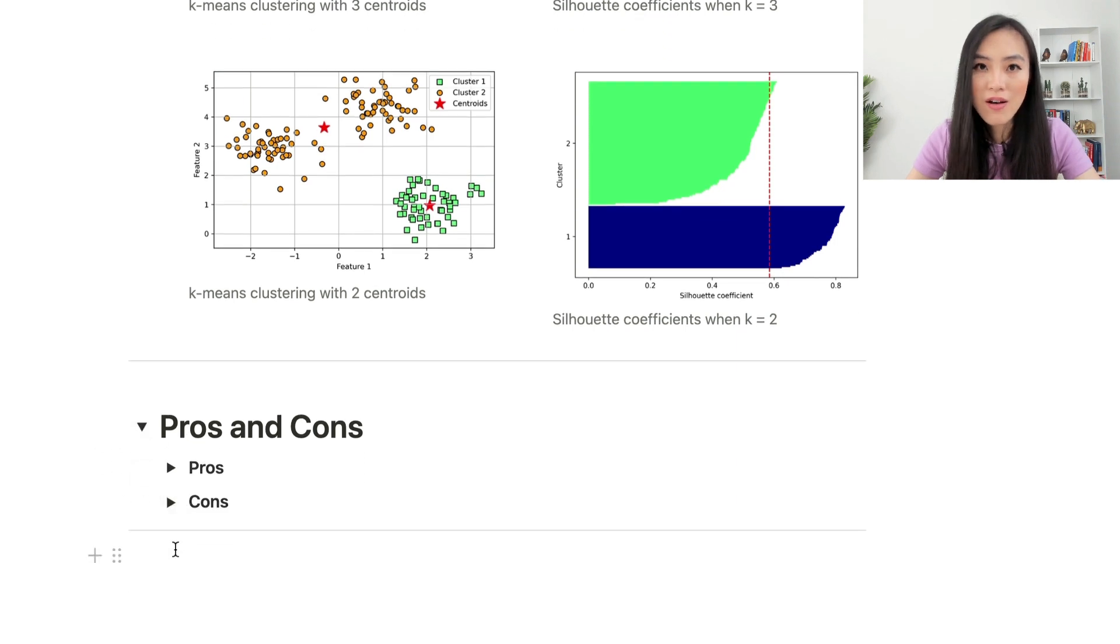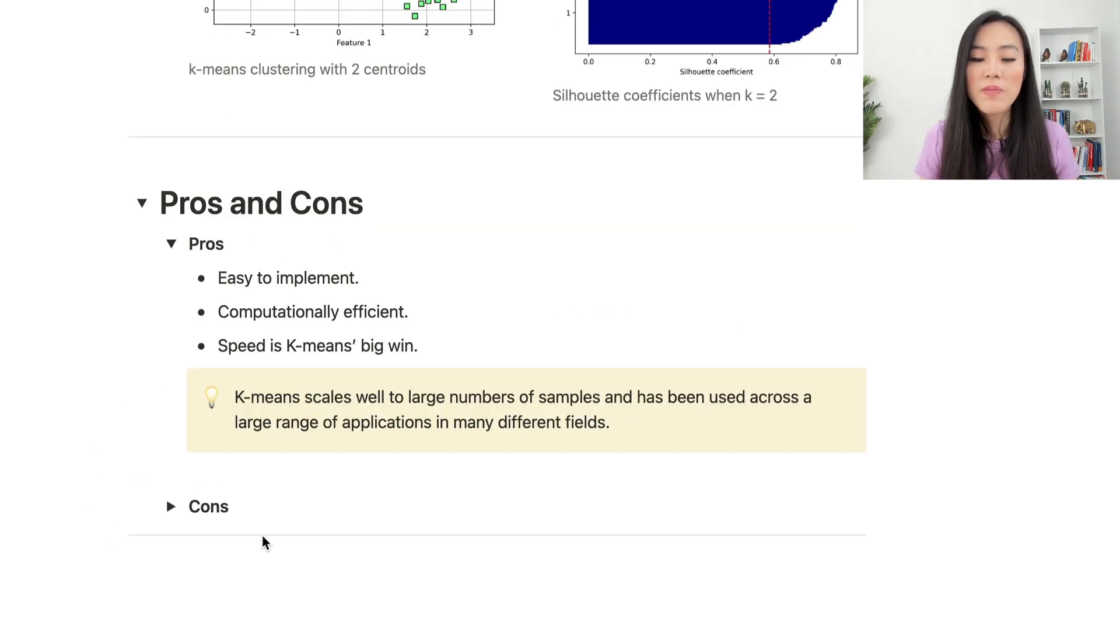Let's summarize the pros and cons of the K-means algorithm. K-means has some advantages over other clustering algorithms. It's easy to implement, it's computationally efficient and speed is K-means' big win. K-means scales well to large numbers of samples and has been used across a large range of applications in many different fields, like I mentioned at the beginning of this lesson.